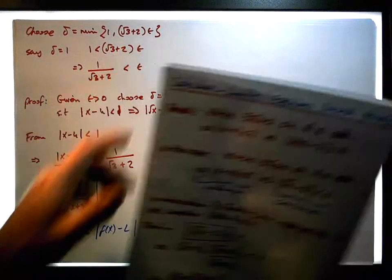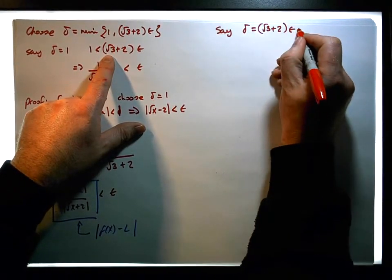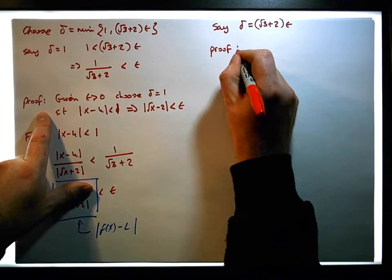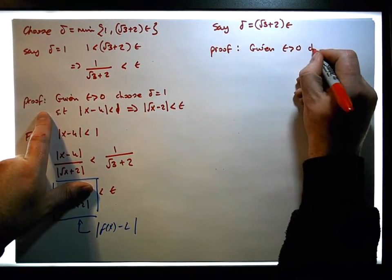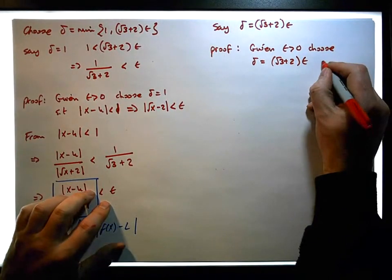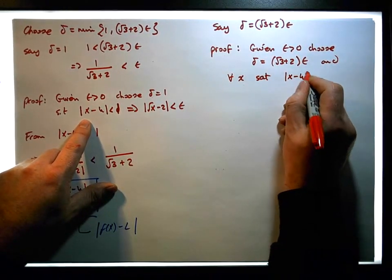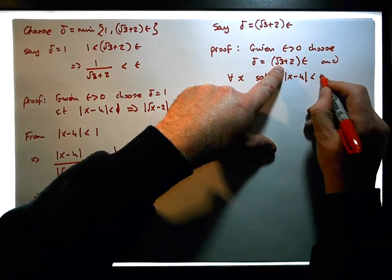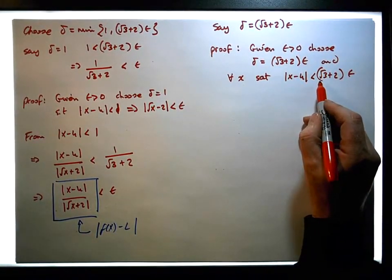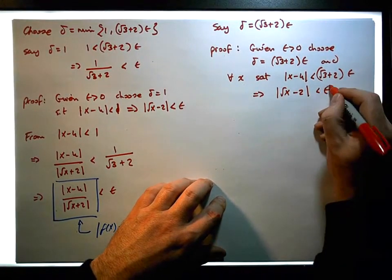Let's say delta equals the square root of three plus two times epsilon — that's our other possible value. So once again, given any epsilon greater than zero, if we choose delta to be equal to the square root of three plus two times epsilon, and for each and every x that satisfies the condition that x minus four is less than delta, we need to show that the absolute value of the square root of x minus two is less than epsilon.